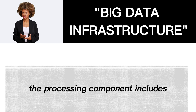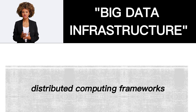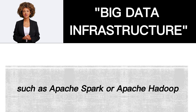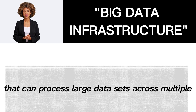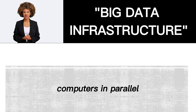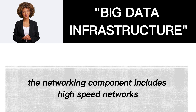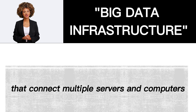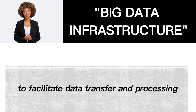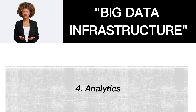2. Processing — the processing component includes distributed computing frameworks such as Apache Spark or Apache Hadoop that can process large data sets across multiple computers in parallel. 3. Networking — the networking component includes high-speed networks that connect multiple servers and computers to facilitate data transfer and processing.